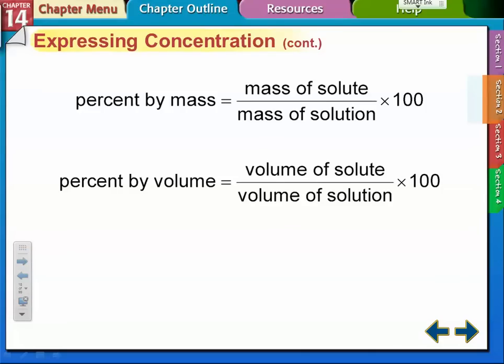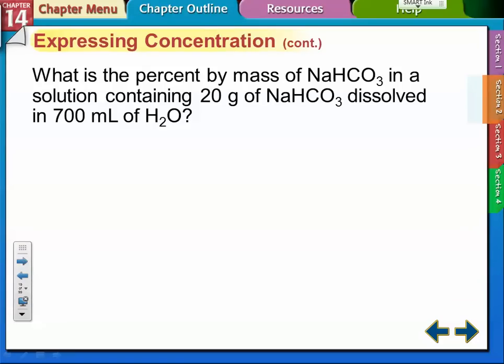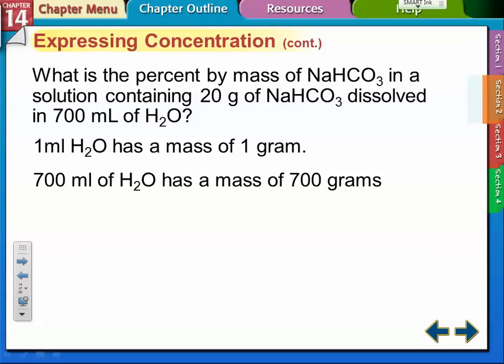Same thing with percent by volume: volumes of the solute over volumes of the solution times 100. Example of doing it by mass, we have sodium bicarbonate, 20 grams of that dissolved in 700 milliliters of water. You have to know that one milliliter of H2O has a mass of one gram, and 700 milliliters of H2O has a mass of 700 grams.